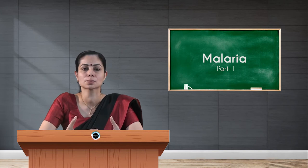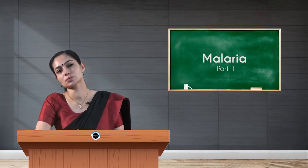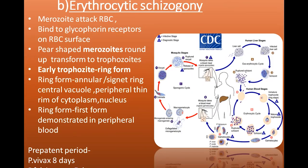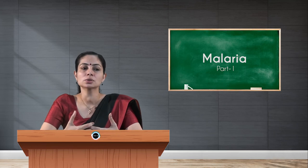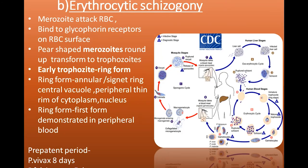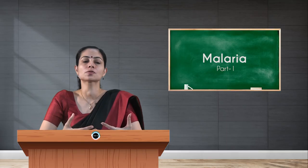The merozoites coming out of pre-erythrocytic schizogony enter into erythrocytic schizogony, which happens in RBCs. The parasite enters the RBC through receptors — glycophorin — via endocytosis. The spear-shaped merozoites transform into trophozoites, called early trophozoites, which have an annular or signet ring structure: a central vacuole, peripheral thin rim of cytoplasm, and a nucleus. This early trophozoite stage is called the ring form.